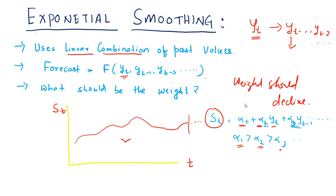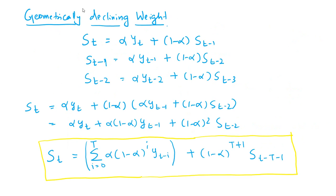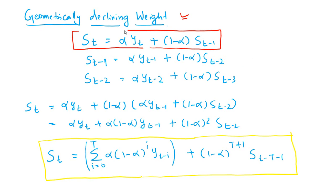That is the logic behind ensuring that alpha1 is greater than alpha2, alpha2 is greater than alpha3, and that pattern goes forward. In exponential smoothing, it is ensured that the weight assigned to different lag values is geometrically declining. So the general form of an exponential time series forecasting model is: ST equals alpha times YT plus 1 minus alpha times ST minus 1.